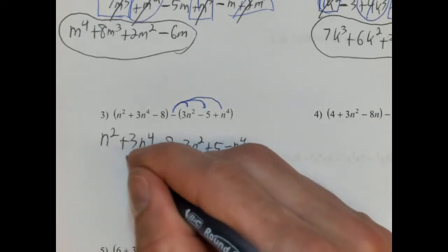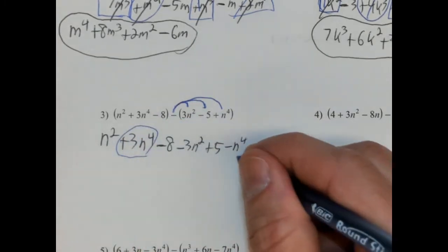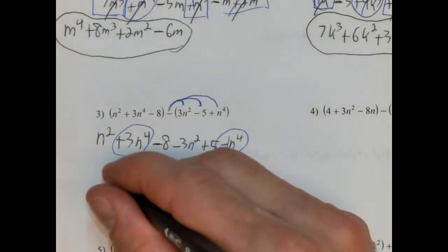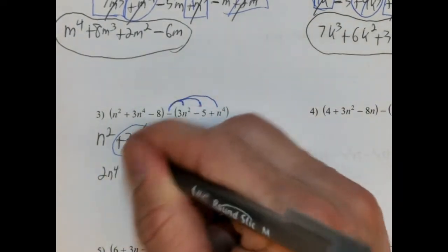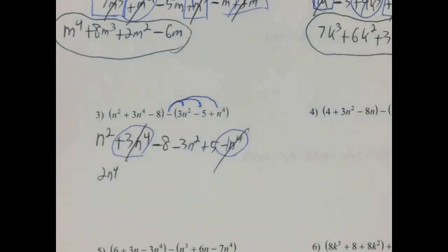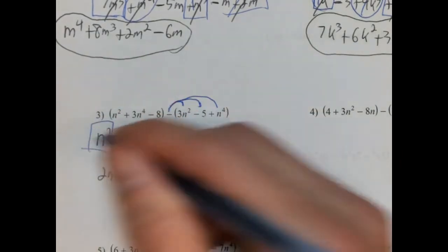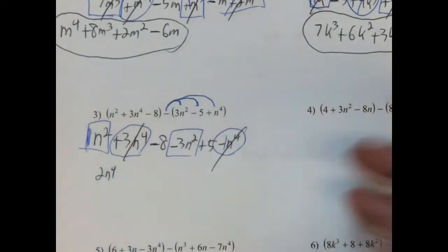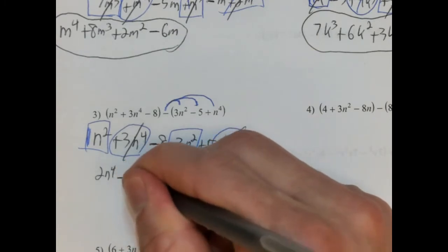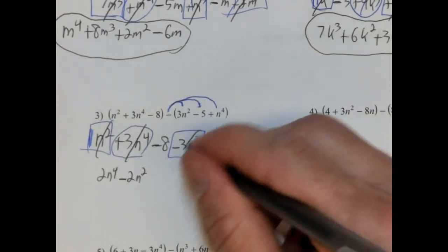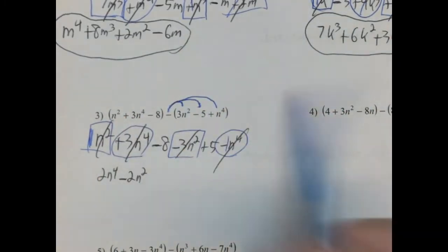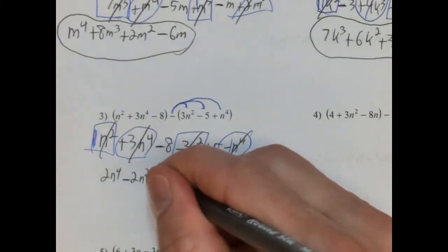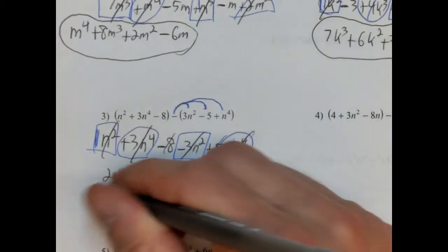So n squared plus 3n to the fourth minus 8. And then, distributing the negative: this becomes negative 3n squared, this becomes positive 5, and this becomes negative n to the fourth. The highest exponent is the fourth power — so we have 3n to the fourth and negative 1n to the fourth. So 3 minus 1 is 2n to the fourth. There aren't any n to the thirds, but there are n squareds: 1n squared, so 1 minus 3 is negative 2n squared. And then we have the integers: negative 8 plus 5 is negative 3. And that's it.